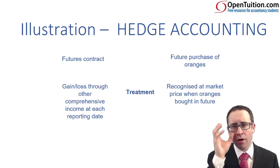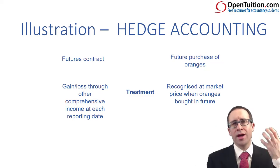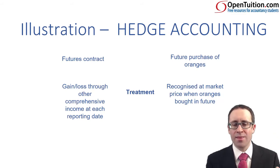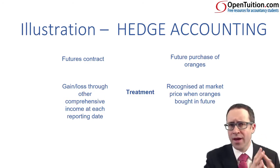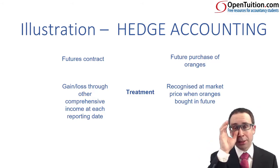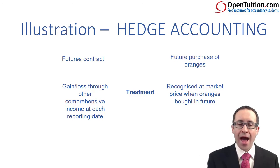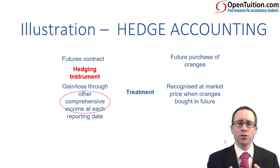That specific purchase of oranges is a highly probable future cash flow. We have a fear of an increase in price, so we have entered into a derivative — a bet on an increase in price. So what we now have is hedge accounting. The accounting for the item doesn't actually change; the purchase of the oranges is still recognised when the transaction takes place at whatever value we pay. However, the hedging instrument — the futures contract — is treated slightly differently because any gains or losses go through other comprehensive income.